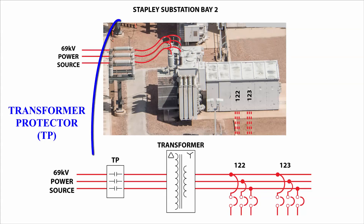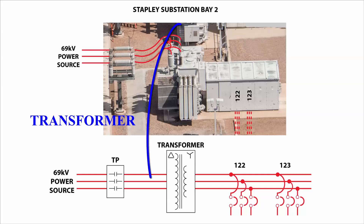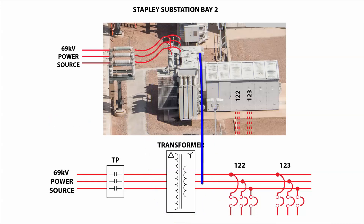The 69 kV source power flows through a transformer protector, which we call a TP. The TP is a low-cost, compact circuit breaker which protects the transformer. The transformer converts three-phase 69 kV power into three-phase 12 kV power. The row of 12 kV circuit breakers is called switchgear.